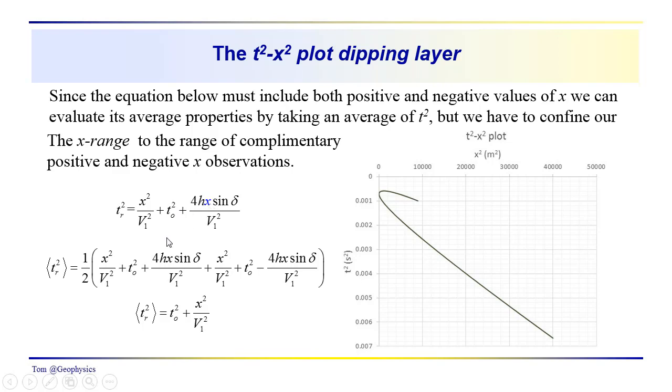If we did so, we'd have a term for the positive measurements of X, we'd have a term for the negative measurements of X. So in our average, we'd end up with, doesn't that look familiar? Looks like the relationship that we're familiar with from the horizontal layer problem.